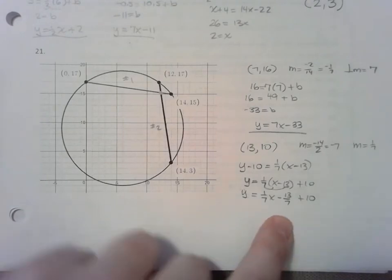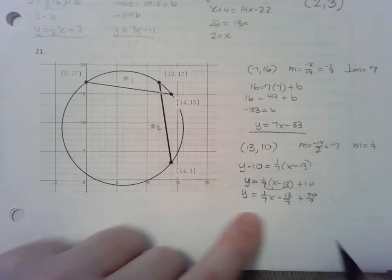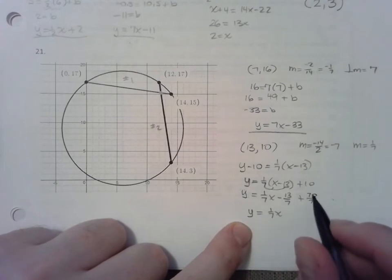Negative 13 over 7 plus 10. Now, if I want to combine these two terms, they have to have the same denominator. I'm going to replace 10 with 70 7ths. 1 7th x. And it looks like 57 7ths.